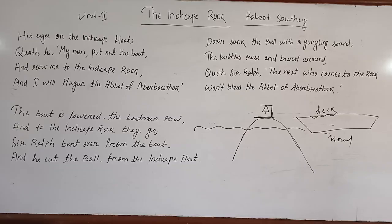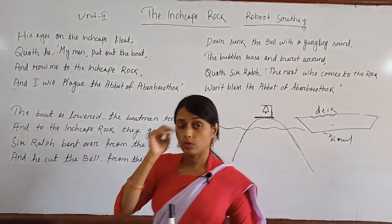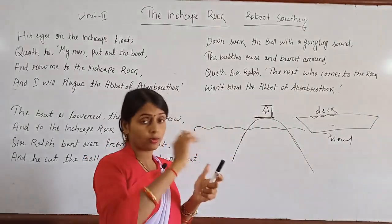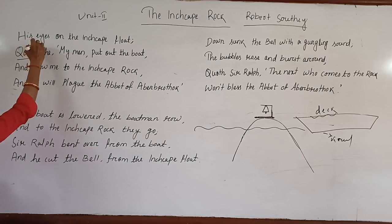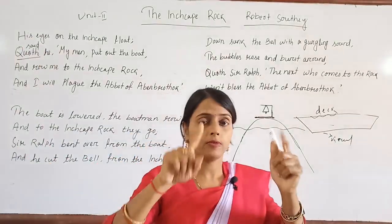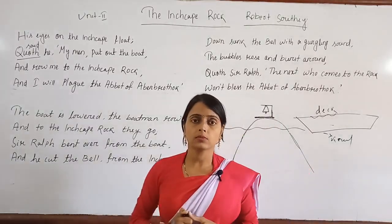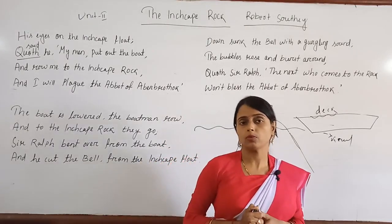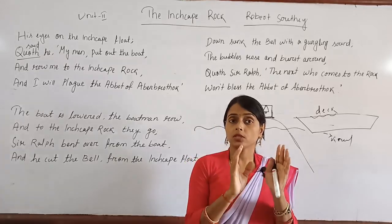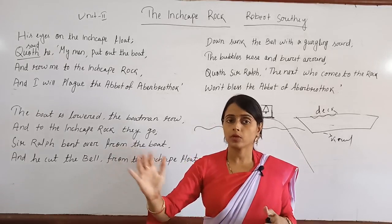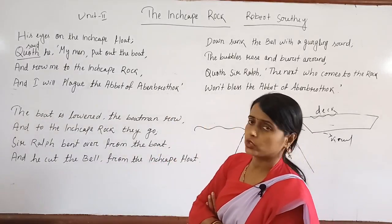Sir Ralph fixed his eyes on the Inchcape float. He said to his men, 'Put out the boat' — meaning take out the small lifeboat from the ship. Sir Ralph had small boats on his ship. When he noticed the Inchcape rock and the Inchcape bell, he told his workers to take the boat out so he could go to the Inchcape rock.